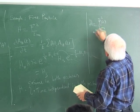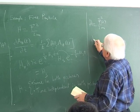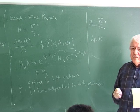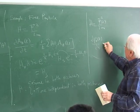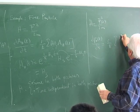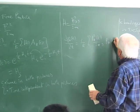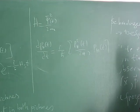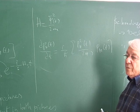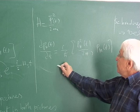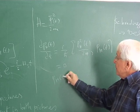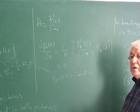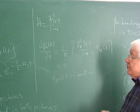Let's work in one dimension. The equation of motion for P is: d P_H(t)/dt = (i/ħ) [P_H²(t)/(2m), P_H(t)]. Since P_H(t) commutes with any function of itself, this is zero. So P_H(t) is a constant of motion — we can take it to be the Schrödinger operator P, its value at t = 0.